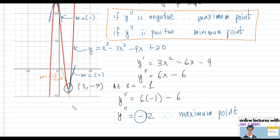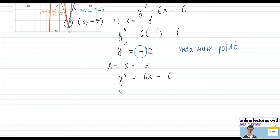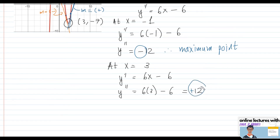Now at x = 3, y'' = 6(3) - 6 = 12. Since this is a positive number, this confirms that (3, -7) is the minimum point. That is how you mathematically prove what is the maximum and what is the minimum point.